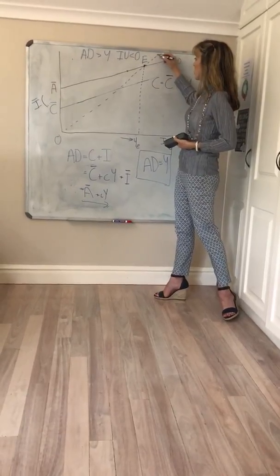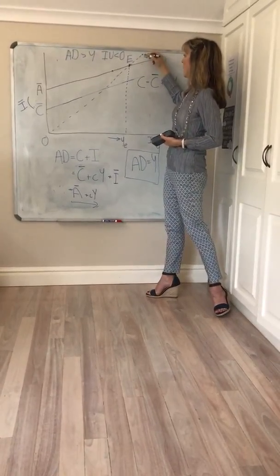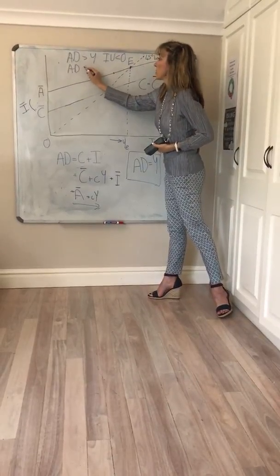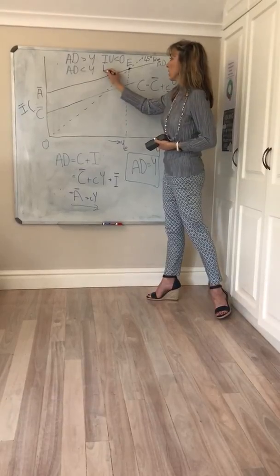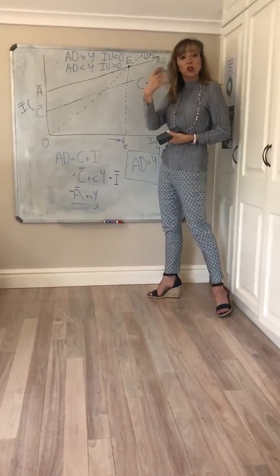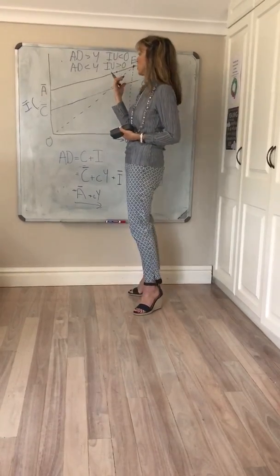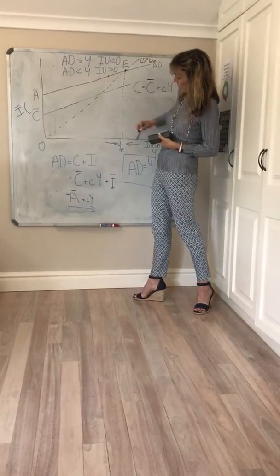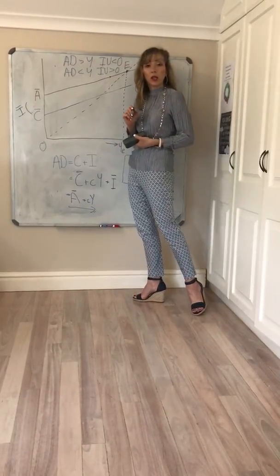What happens if we're at a point to the right, where income or output exceeds aggregate demand? Your output is greater than your aggregate demand, so your unplanned inventories are going to start to rise — stocks start to accumulate. It signals to producers that they're making too much, so they need to decrease production until you get back to equilibrium.